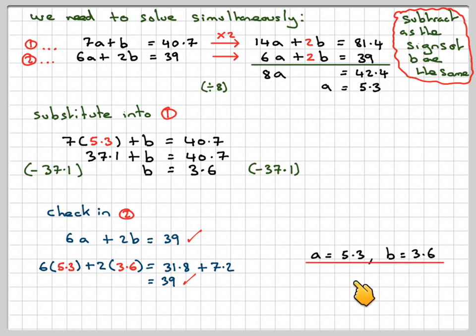So the answers are A = 5.3 and B = 3.6. This has been a video showing how to form simultaneous equations from perimeters of shapes and find two unknowns. Thank you for watching.